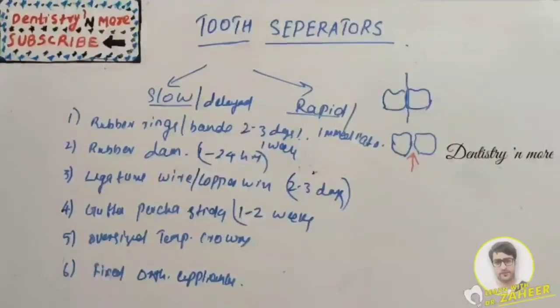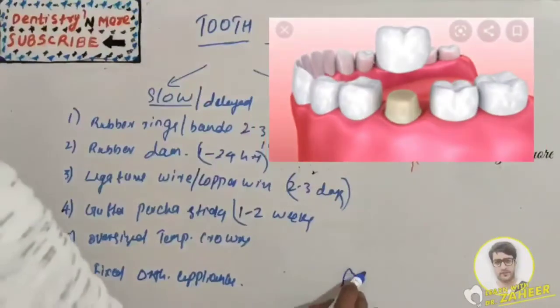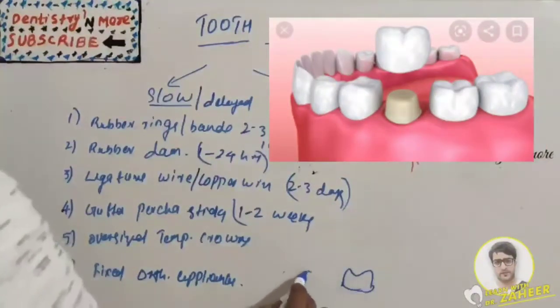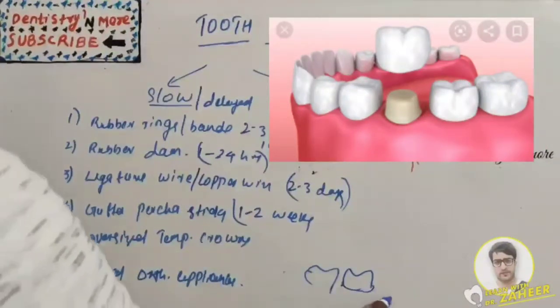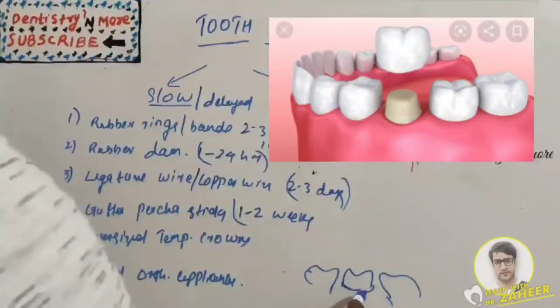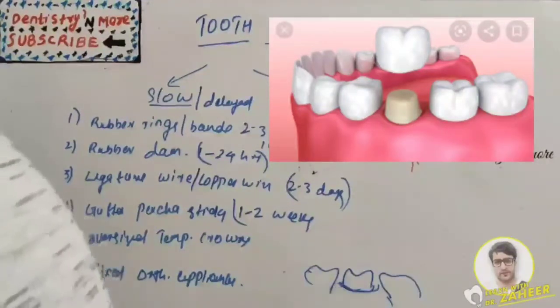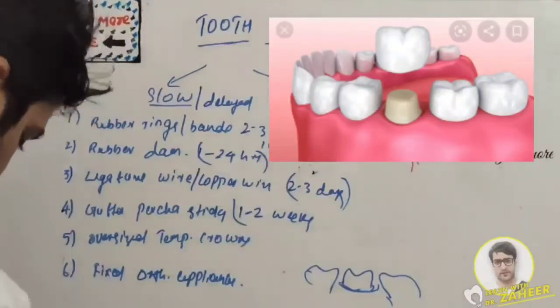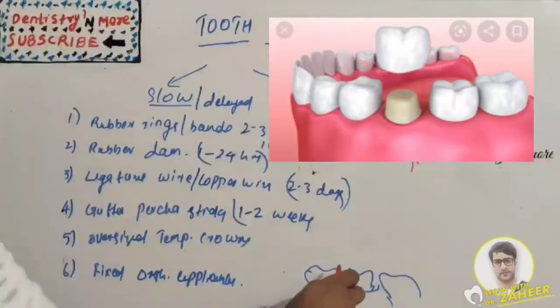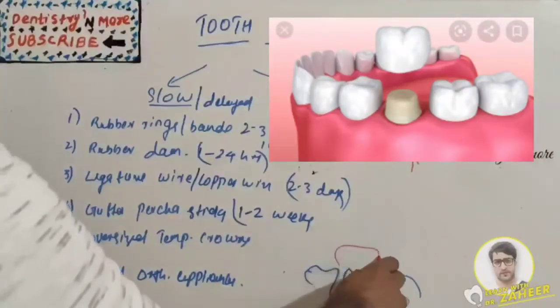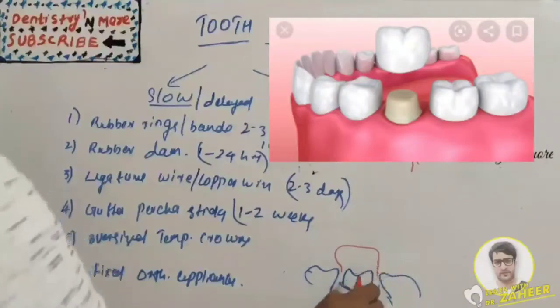Oversized temporary crowns: if we have a crown preparation here, this is a prepared crown. What we do is place an oversized crown over here to get the separation of teeth.